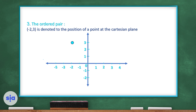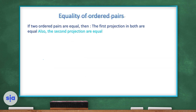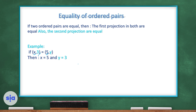If two ordered pairs are equal, then the first projection equals the first projection and the second projection equals the second projection. For example, x is the first projection so x equals 5, and 3 is the second projection so y equals 3. When two ordered pairs are equal, x values are equal to each other and y values are also equal to each other.